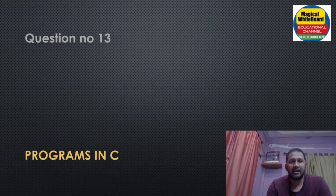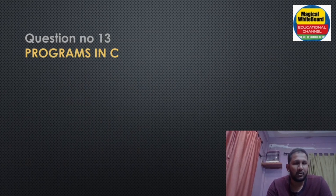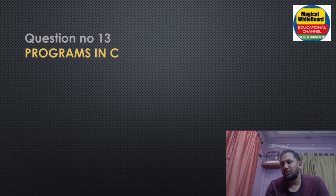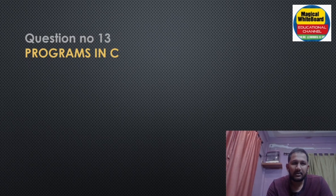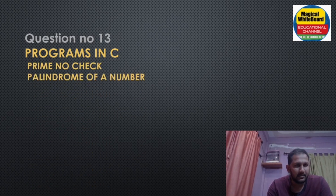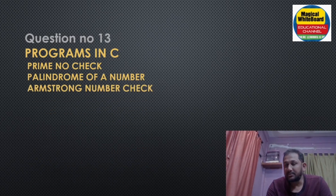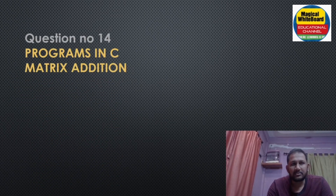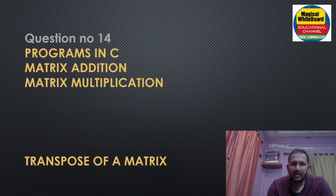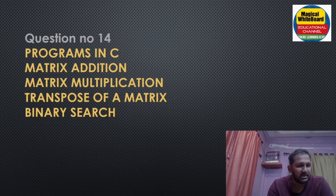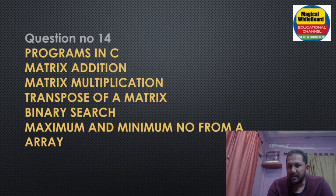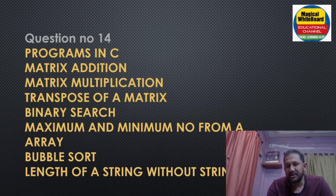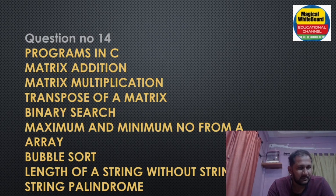Question number thirteen: important programs in C — definitely check these questions. Programs include: prime number check, palindrome of a number, Armstrong number check, linear search, matrix addition, matrix multiplication, transpose of a matrix, binary search, maximum and minimum number from an array, bubble sort, length of a string without string.h, and string palindrome.